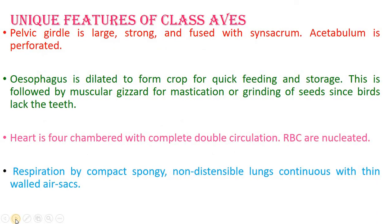The pelvic girdle is large, strong, and fused — forming the synsacrum — and the acetabulum is perforated. The pelvic girdle provides attachment for the lower limbs or legs. The pelvic girdle has three parts: ilium, ischium, and pubis.